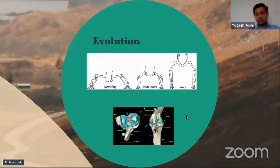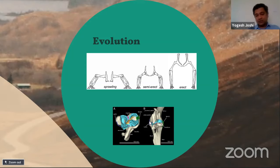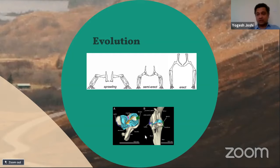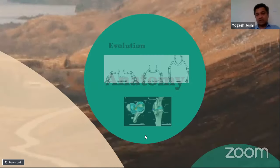Looking at the evolution of these structures over thousands of years: in primitive humans and animals, the fibula articulated with the femur, with a meniscus between them. That has now developed into what we call the popliteofibular ligament. The lateral collateral ligament became a distinct structure as humans evolved. Because of the descent of the fibula from the femur to the tibia, the complexity of the posterolateral corner structures arose — and that's what we need to understand.